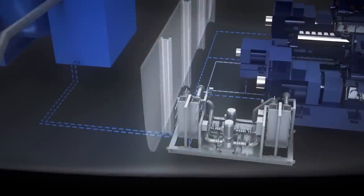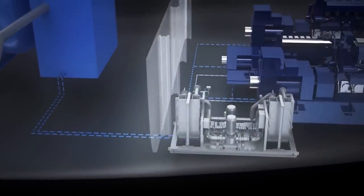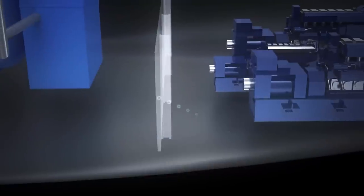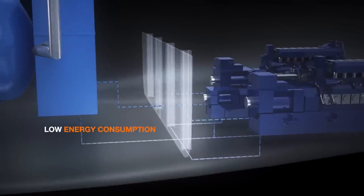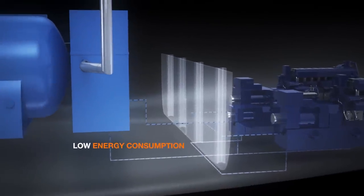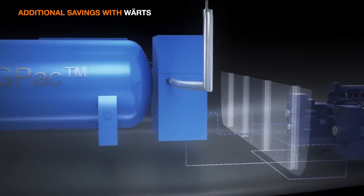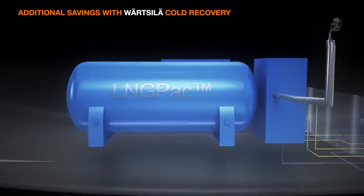The heating media skid and its pumps are replaced by an intermediate heating media circuit in the tank connection space. This reduces the number of components and lowers the electrical consumption, thus resulting in lower installation and operating costs, as well as better space utilization.